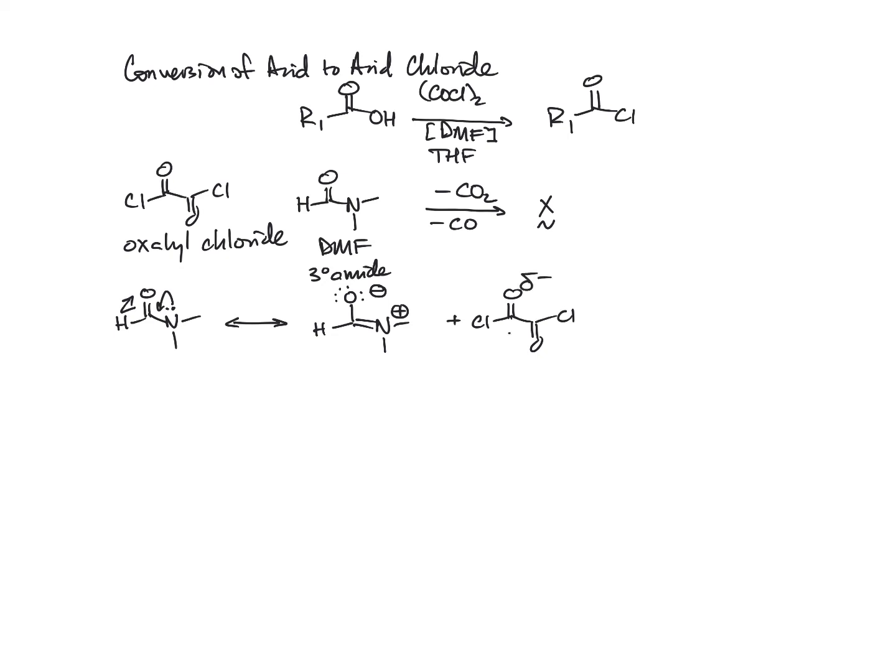And that's going to help dictate how the next arrow is drawn, where basically we're reacting it with the oxalyl chloride. Here's delta minus, there's delta plus. So that's telling us that the negative is attracted to the positive. We can go ahead and draw that arrow. We're going to break the pi bond.